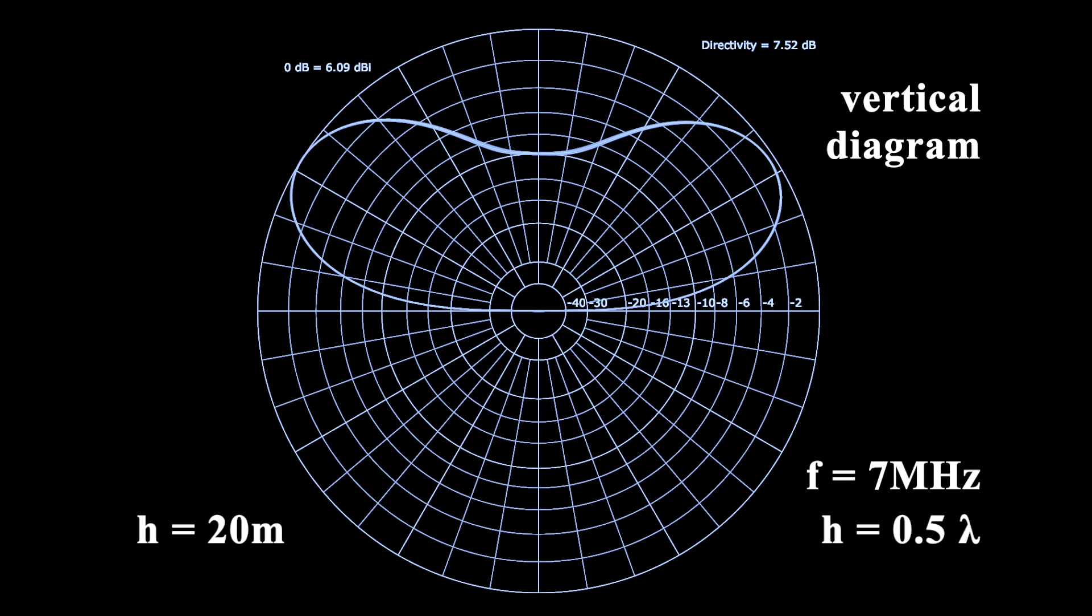We start at 20m height, corresponding to a half wavelength. The elevation of the main beam lobe is at 30 degrees, which is not ideal. Actually, we would prefer 12 degrees, but okay, we don't lose much of radiation power at the lower angles.